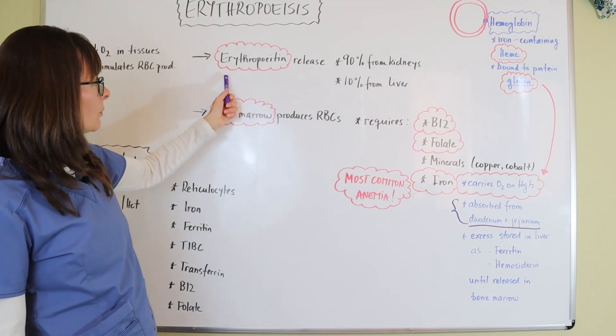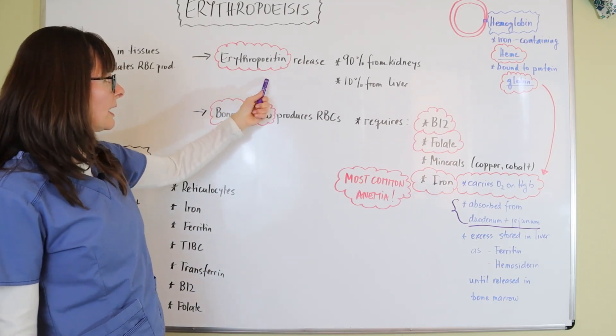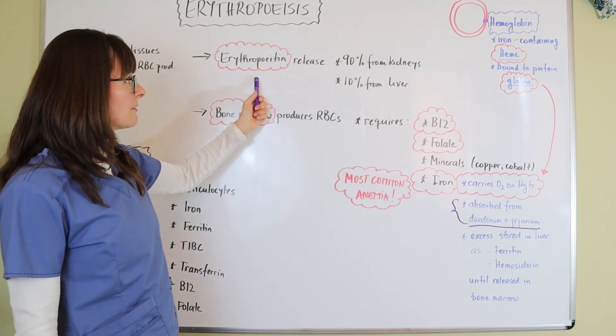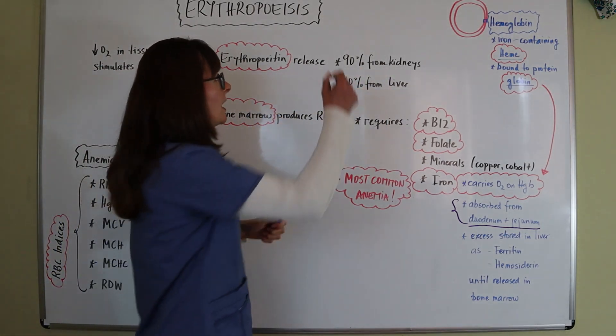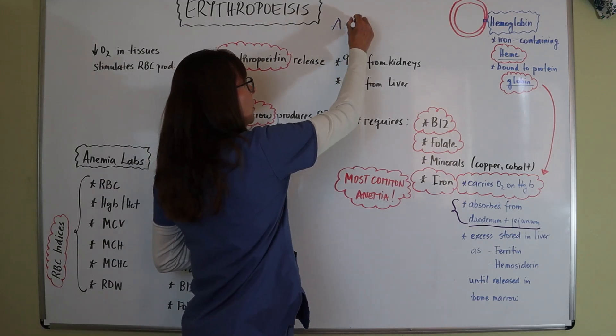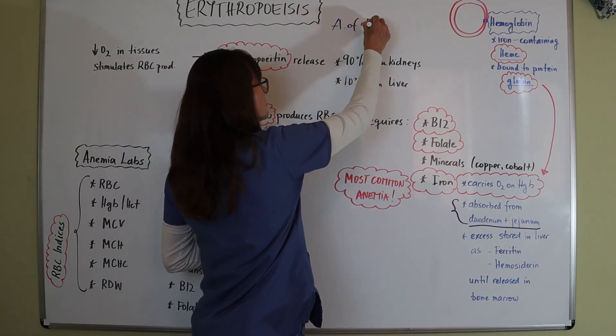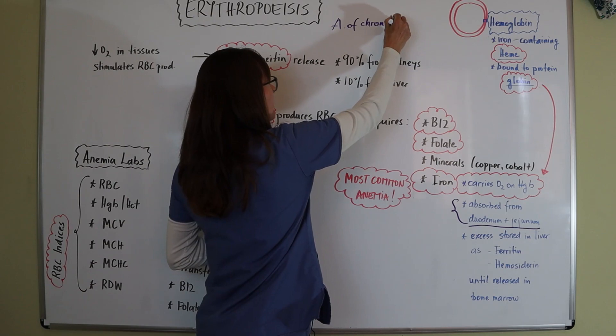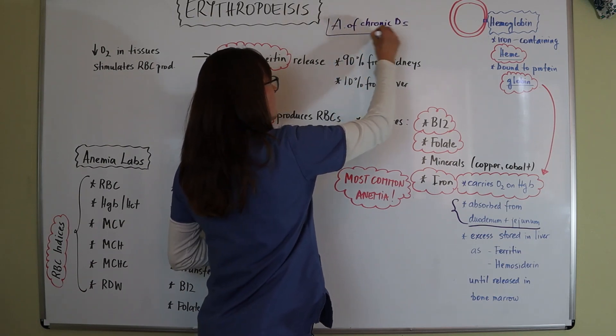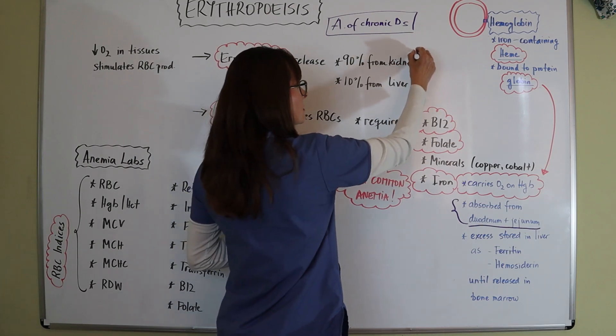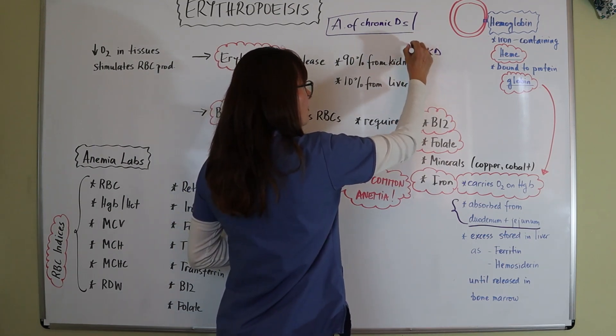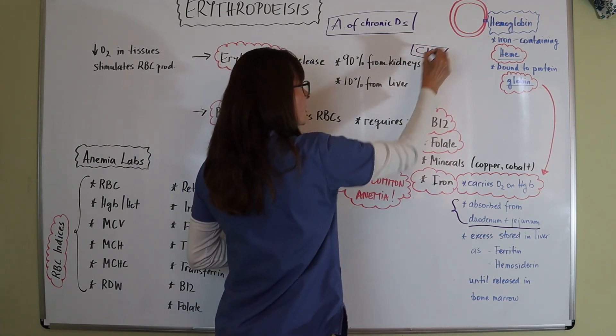When there's something going on with erythropoietin, when we can't produce enough of that, there's usually something going on with the kidneys or the liver. And this is called anemia of chronic disease. So think about anemias because of chronic kidney disease, CKD.